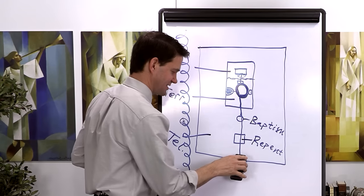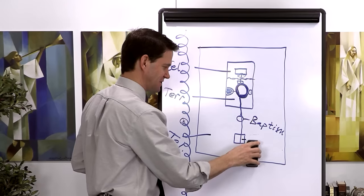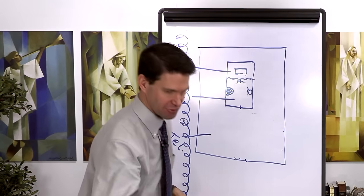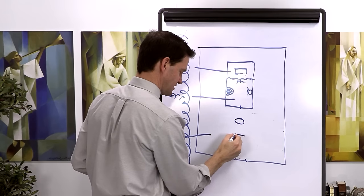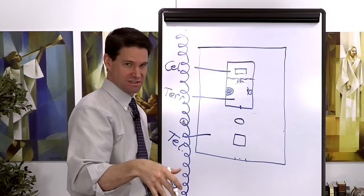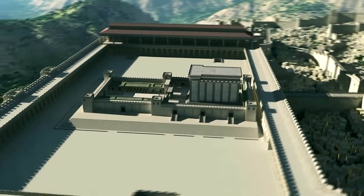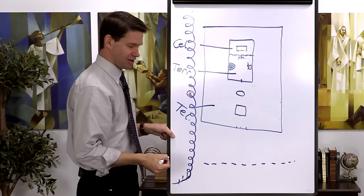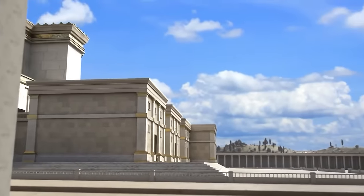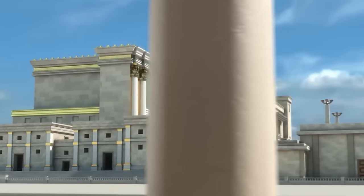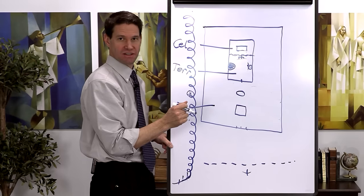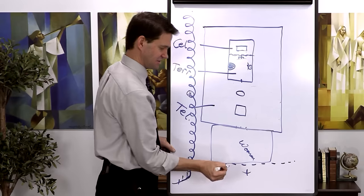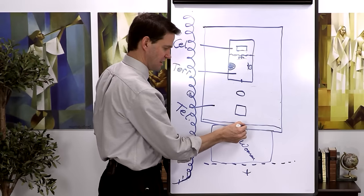One other thing to add to this overlay: a realization of what it means to live in the dispensation of the fullness of times. In Jesus's day, in Nephi's day, in Moses's day, there were very clearly delineated boundaries. In the time of Jesus, if you're a Gentile in Herod's temple, there is a fenced latticework you are not allowed to pass—that's as close as you can come to the presence of God. If you're a woman, you could come into the court of the women. If you're a man, into the court of the men. If you're a priest, the court of the priests.